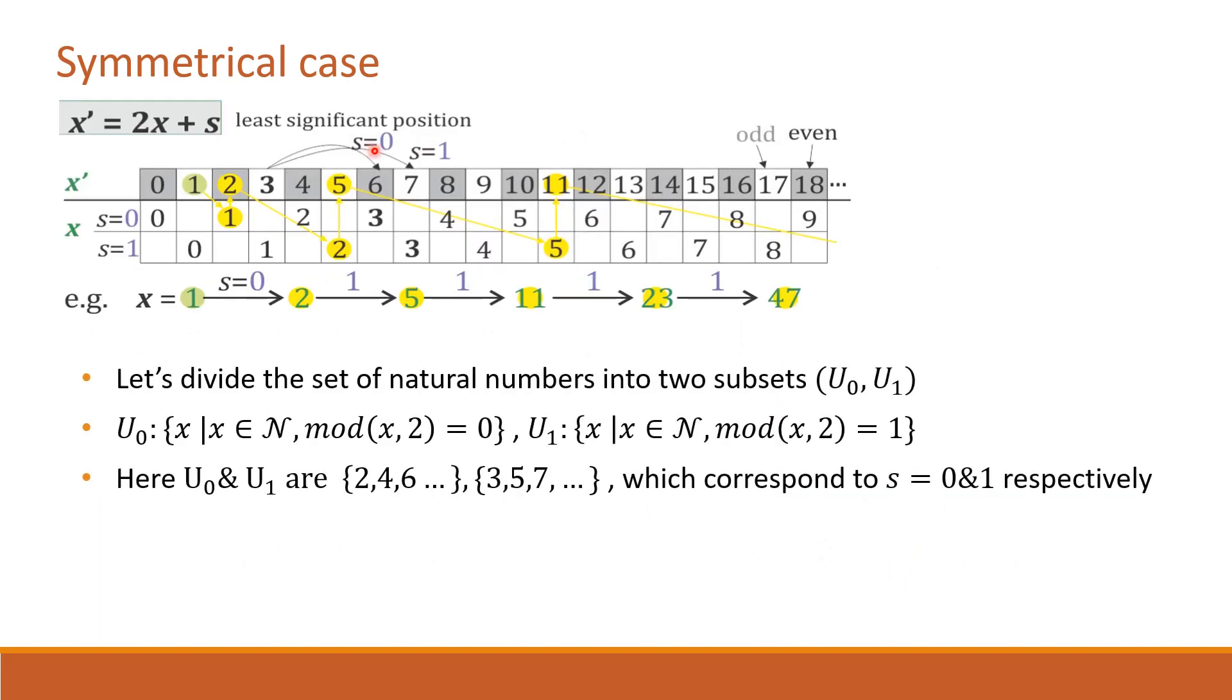Let's visualize the example in a different way. Divide the set of natural numbers into two subsets, even and odd. Here, as we can see, even numbers occupy the black squares and odd numbers occupy the white squares. As we are starting with the initial state of x equal to 1, just strike out 1 from U1.